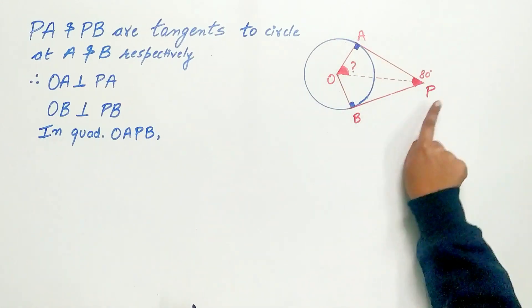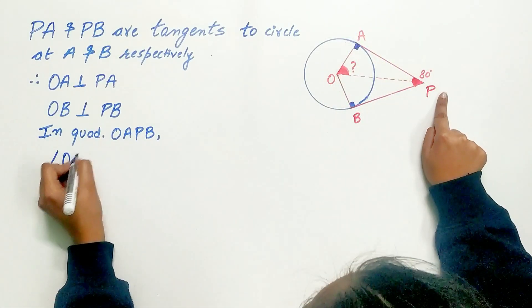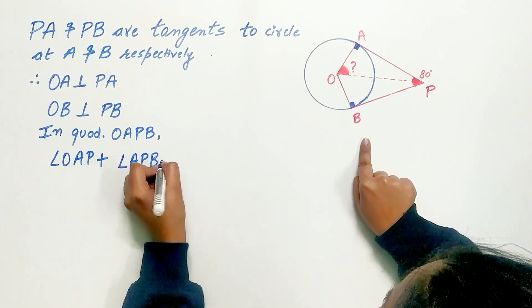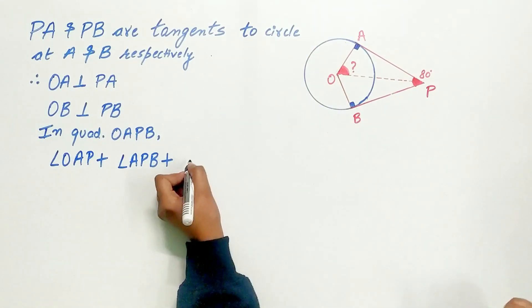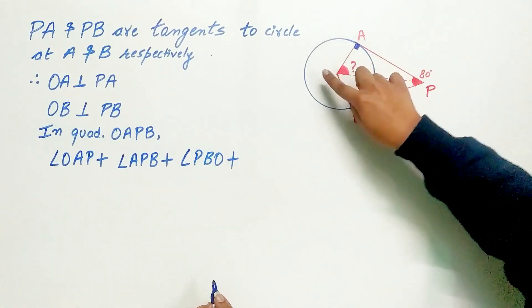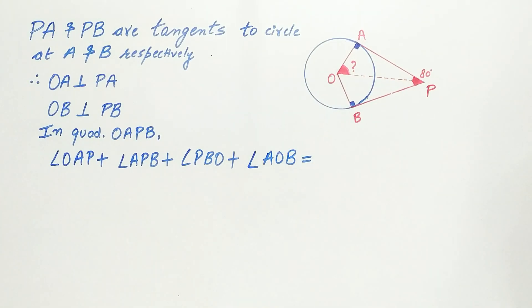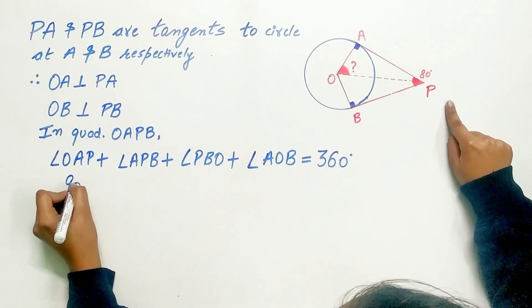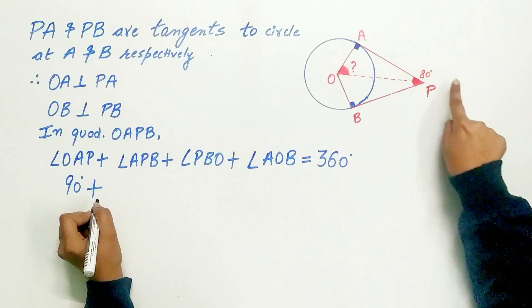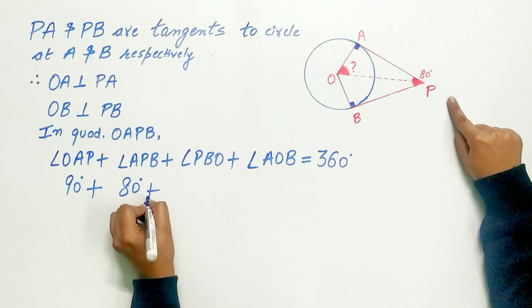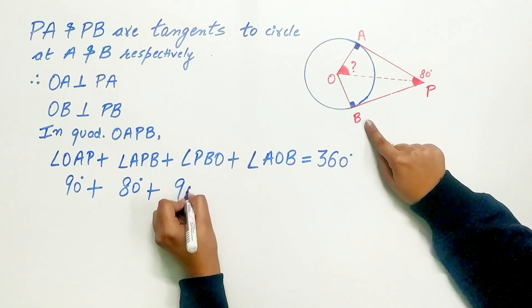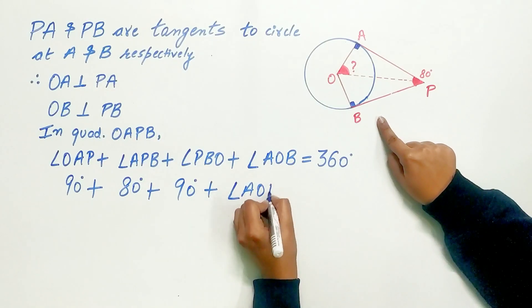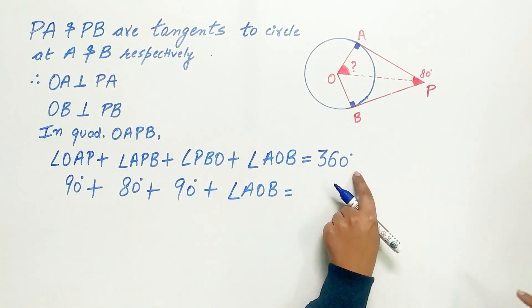In quadrilateral OAPB, angle OAP plus angle APB plus angle PBO plus angle AOB is equal to 360 degree. Angle OAP is equal to 90 degree, angle APB is equal to 80 degree, angle PBO is equal to 90 degree. Angle AOB, we have to find out. The sum is equal to 360 degree.